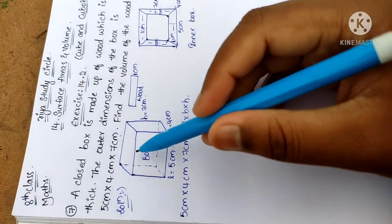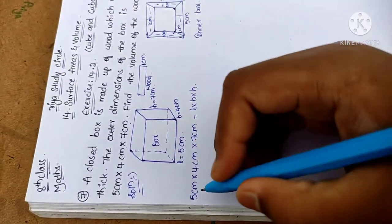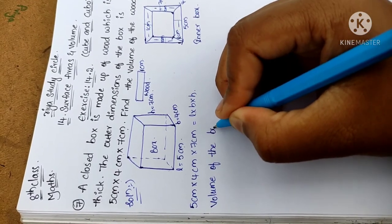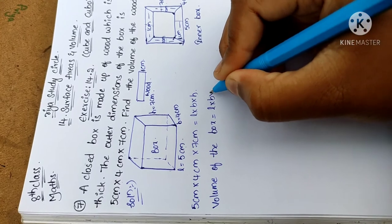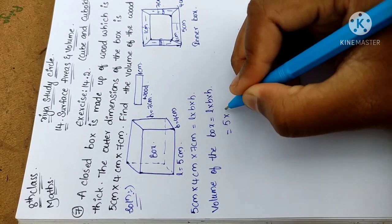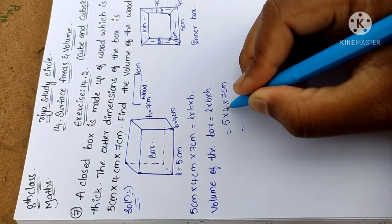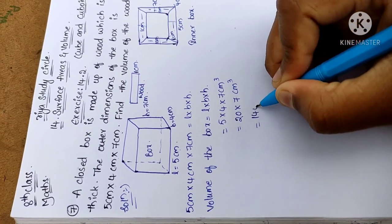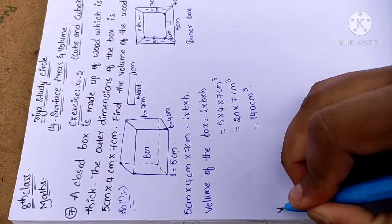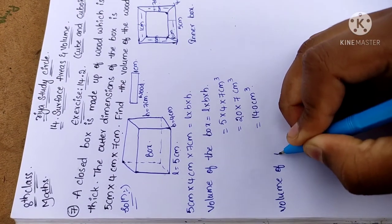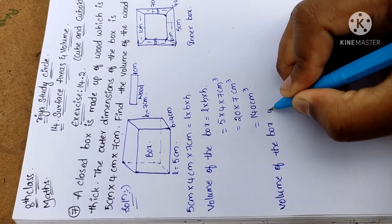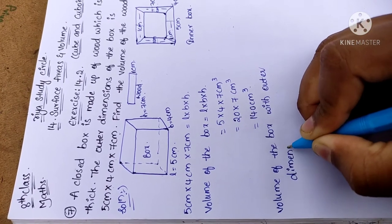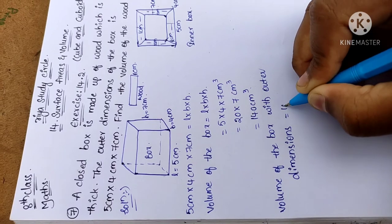We have to find the volume of the box with outer dimensions, which equals length × breadth × height = 5 × 4 × 7 cm³. Five fours are 20, into 7 gives 140 cm³. So the volume of the box with outer dimensions is 140 cm³.